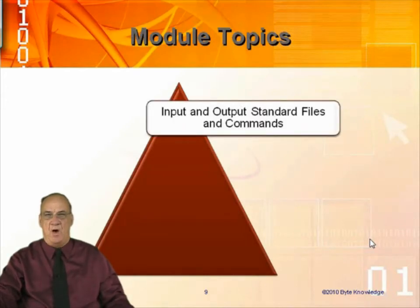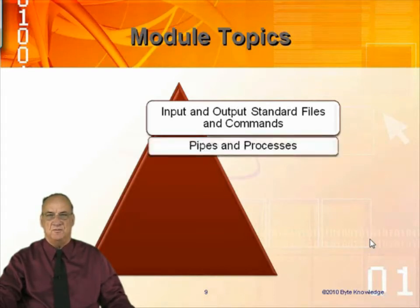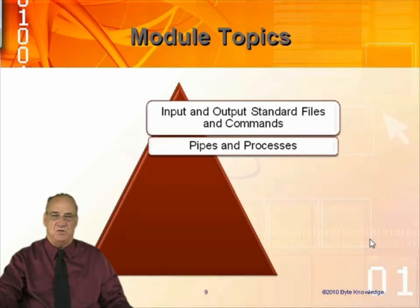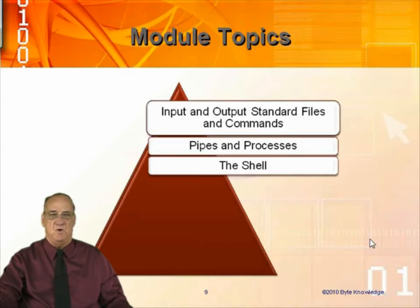File descriptors — input and output. How do you control processes using redirection, and what are file descriptors 0, 1, and 2? Pipes and processes — what is a pipe, what's the difference between a pipe and redirection, and what is a process? What is the child-parent relationship in Unix that makes it so much more dependable than the competition? The shell — what is a shell, why do you need to know about it, what are its properties and options, and what can you do by changing shells?